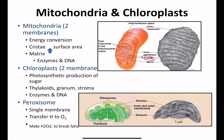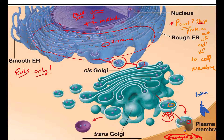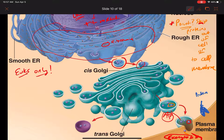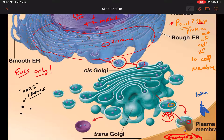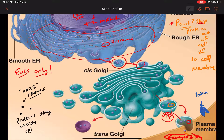Free ribosomes — ribosomes not bound to the rough ER — are going to make proteins that stay inside the cell. They don't have any part of the ER to make their own vesicle, so those proteins remain inside. The key thing is: if you're shipping proteins out of the cell, they go through the endomembrane system.